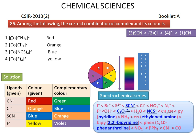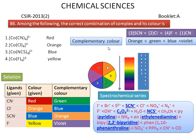First, we arrange the ligands according to the spectrochemical series. Then we arrange the complementary colors absorbed according to increasing energy. Orange is the lowest energy, green is the next higher energy, blue is the next higher energy, and violet has the highest energy. These complementary colors are arranged in increasing order.